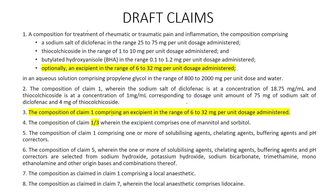Claim 7 is a dependent claim which talks about another additional ingredient that could be added to the composition — a local anesthetic. Claim 8 is a dependent claim on claim 7 and it further defines what the local anesthetic could be.